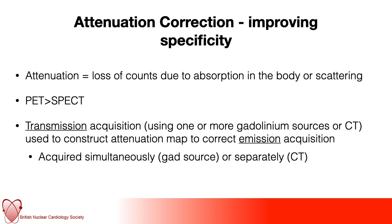Attenuation is the loss of counts due to absorption or scattering within the body. It is a much bigger issue in PET than in SPECT because PET requires simultaneous detection of two photons — coincidence detection — so any attenuation has a much greater impact. This is why CT is obligatory in PET, hence why it is always abbreviated as PET-CT. The transmission acquisition is used to construct an attenuation map, which is then applied to correct the emission acquisition, improving specificity.